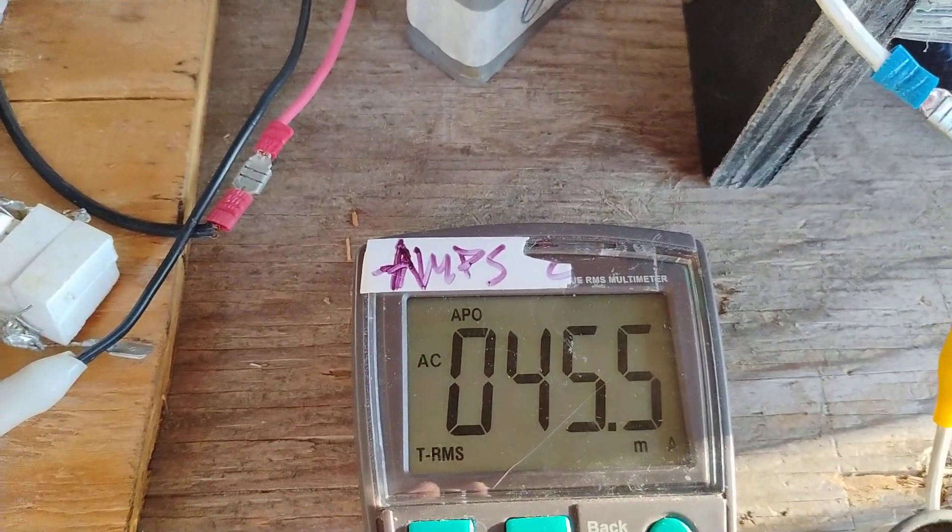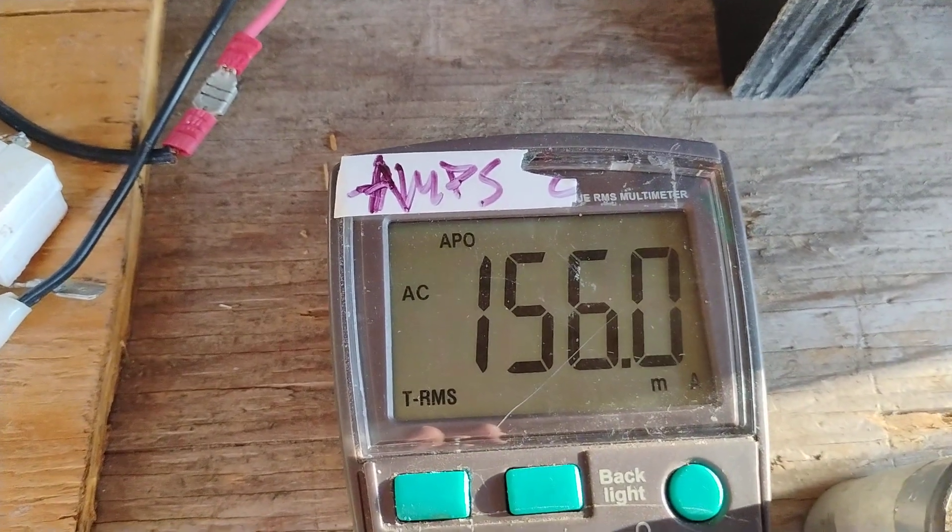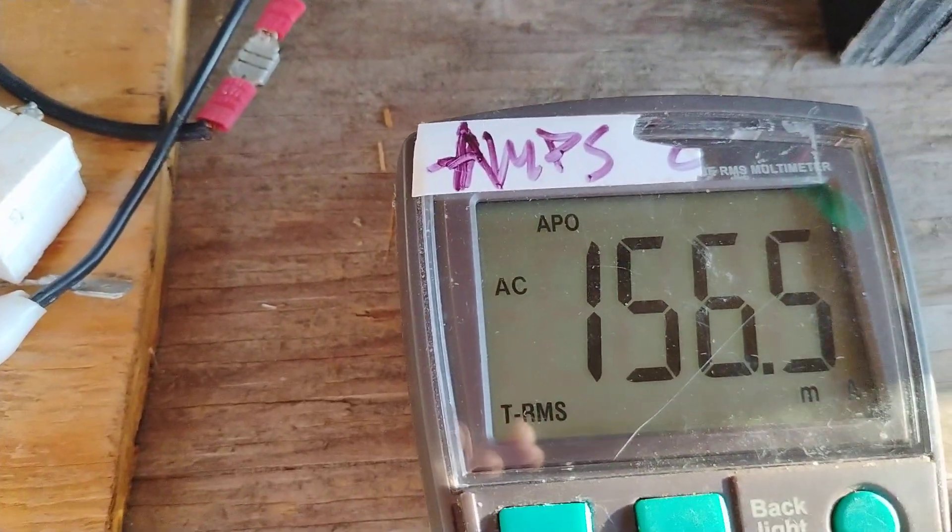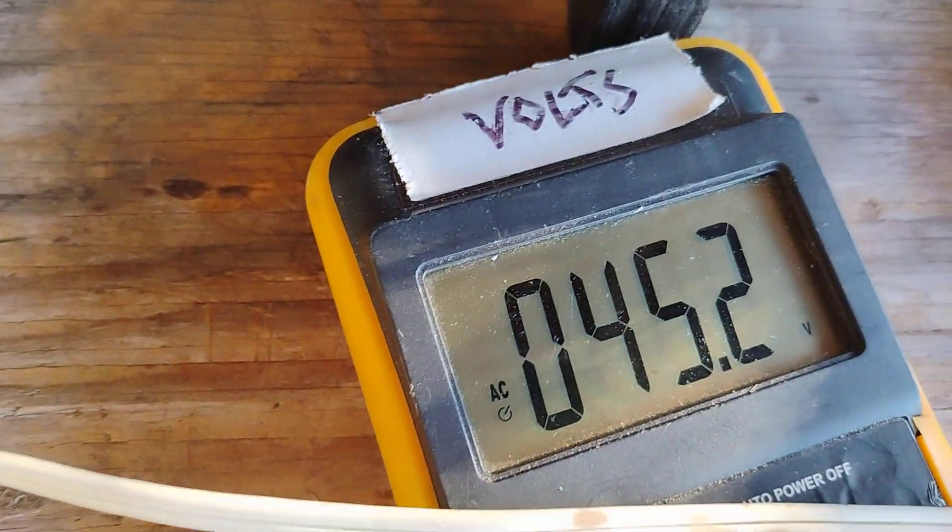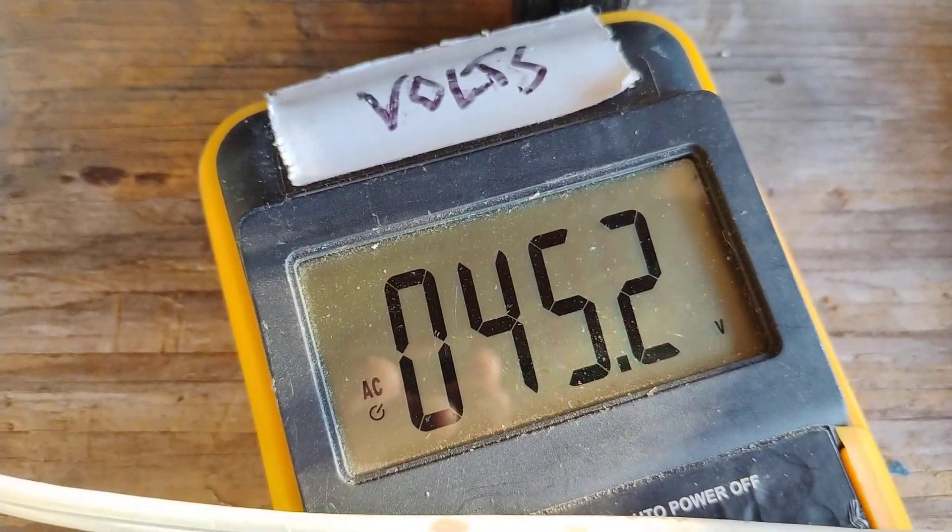Now watch when I put the series cap in. Now the draw goes up quite a bit. But look how many volts I have across that 50 ohm resistor now.